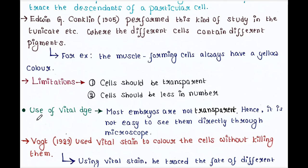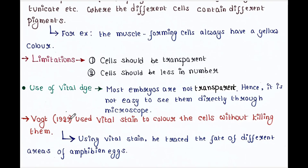The next process is use of vital dye. Most embryos are not transparent, hence it is not easy to see them directly through a microscope. Boat in 1929 used vital stain to color the cells without killing them, and using vital stain he traced the fate of different areas of amphibian eggs.